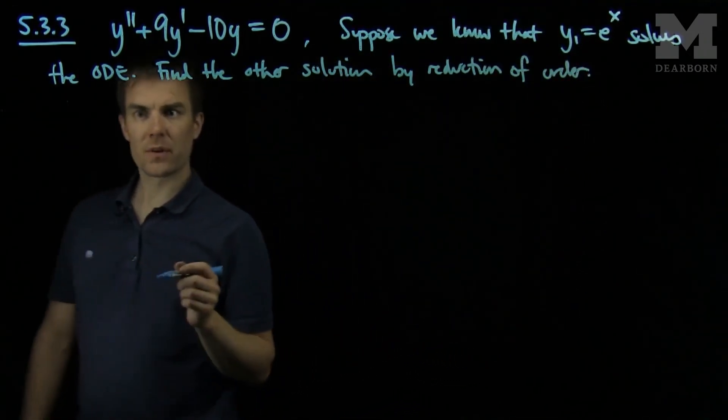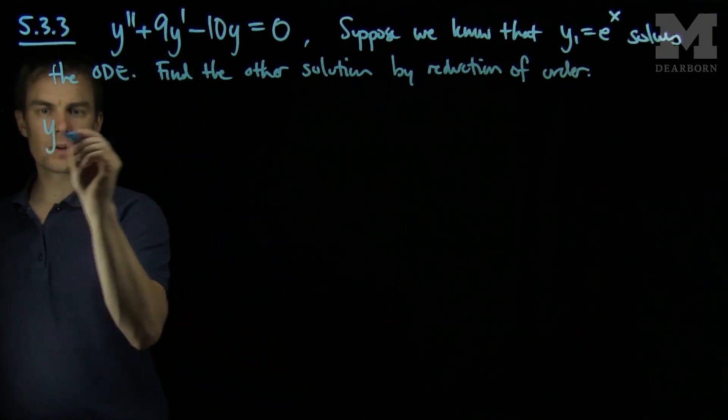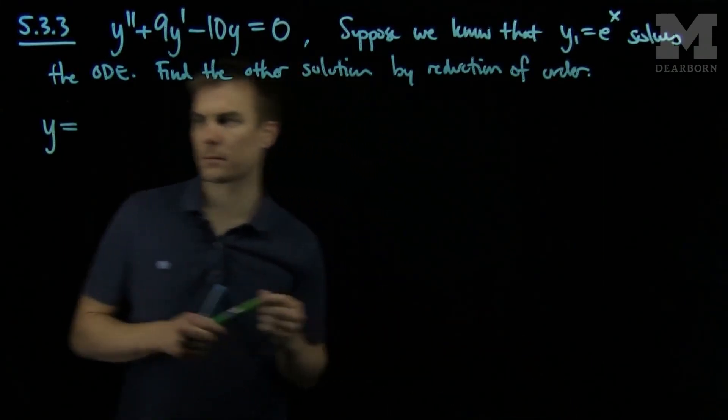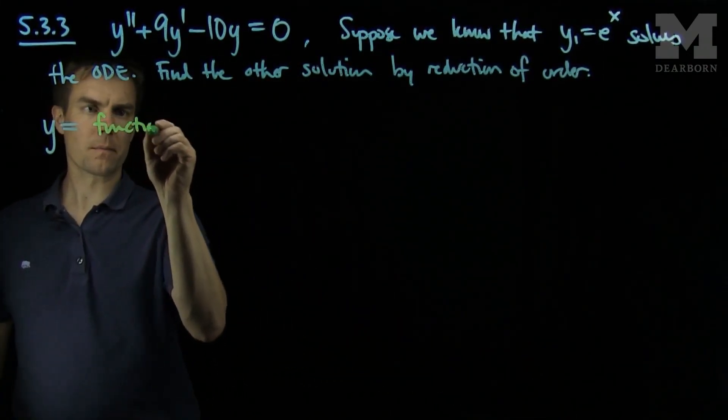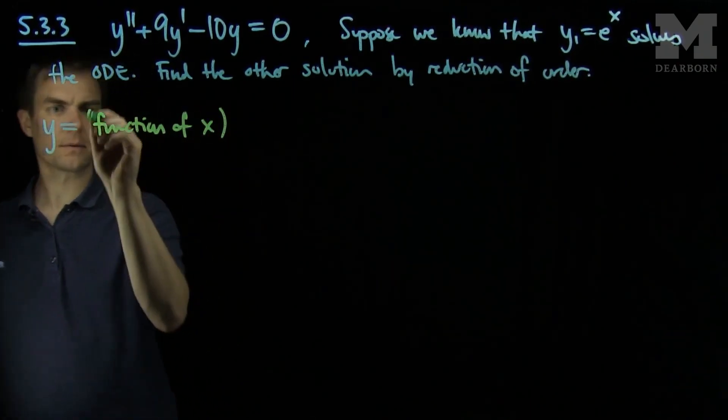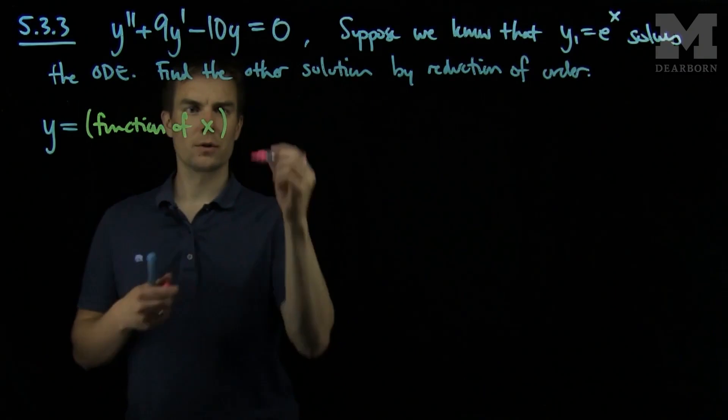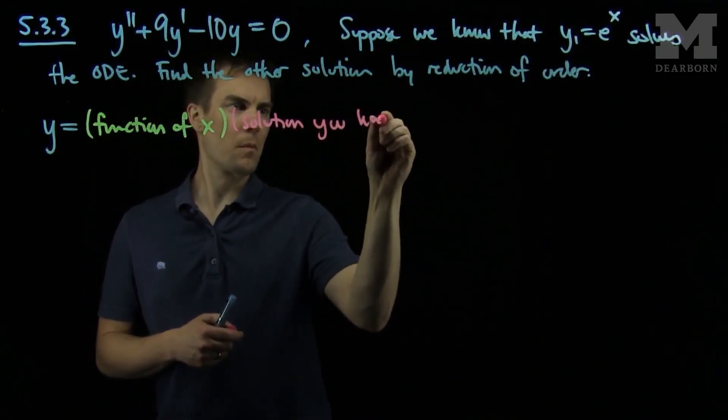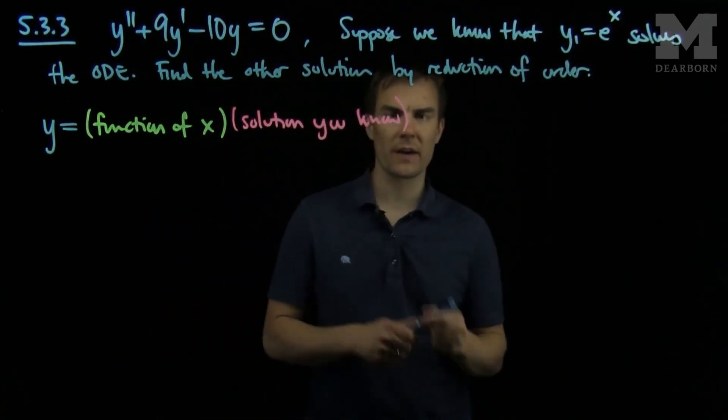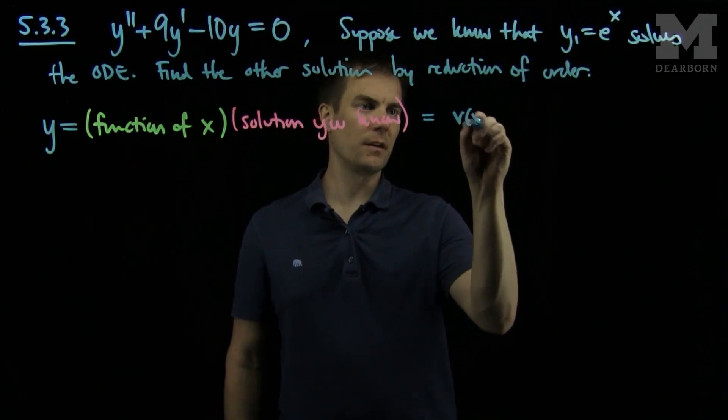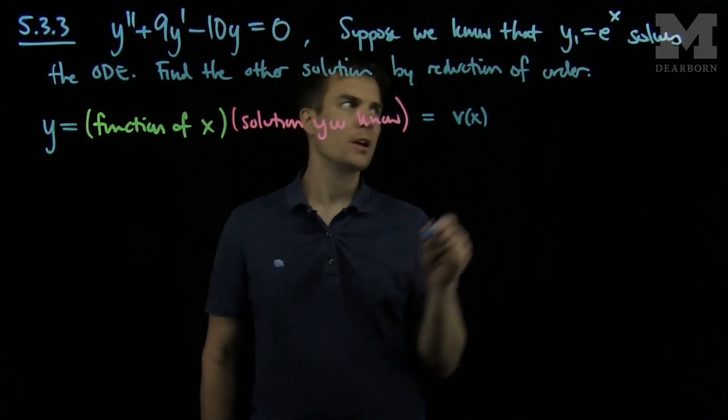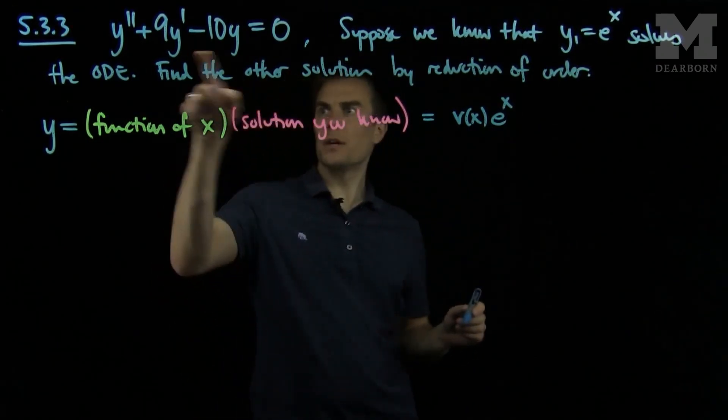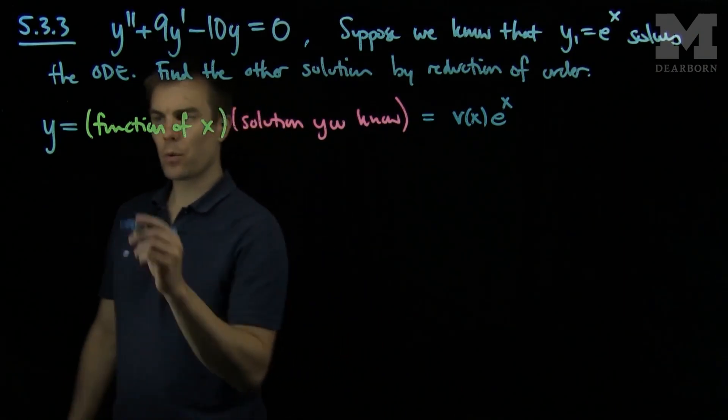Reduction of order tells us that if we have a second order ODE, we can find the general solution by writing y as a function of x times the solution you know. So in this case, we'll have a function of x, which we'll typically denote by v of x. The solution we know is e to the x. So we're going to try to find the solution to this ODE of this form. So we'll differentiate.